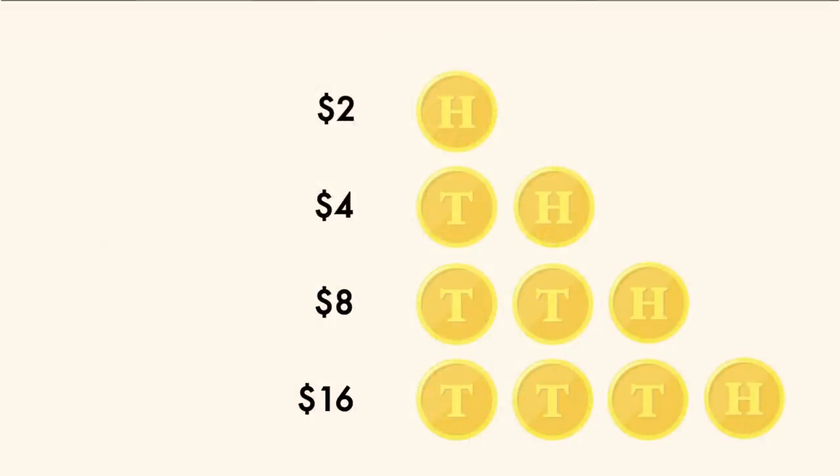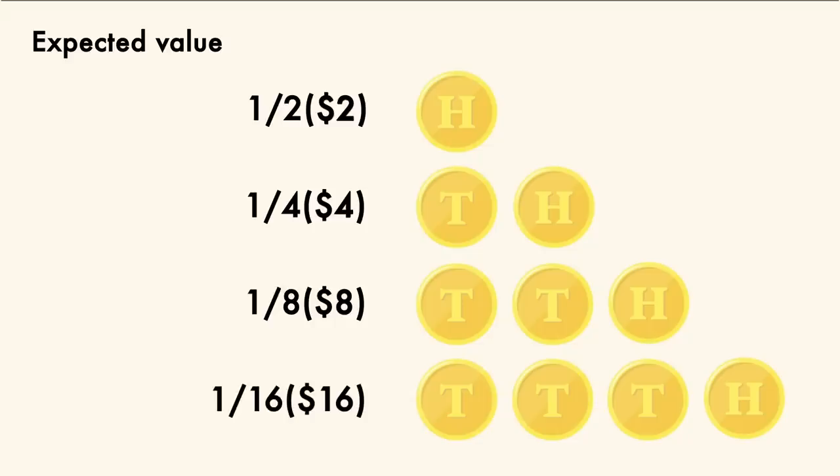The reason is because if you calculate that expected value, you find that half the time you'll win $2, which would happen when heads comes up first. A fourth of the time you'd win $4, an eighth of the time you'd win $8, a sixteenth of the time $16, and so on. The payout and probability reduce to 1 every time, and since this is an infinite sum, your expected payout is infinity.